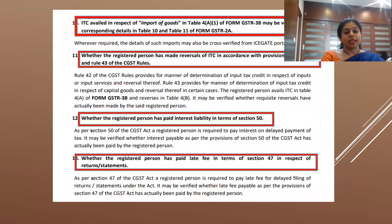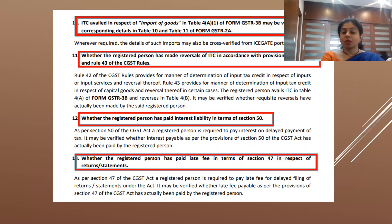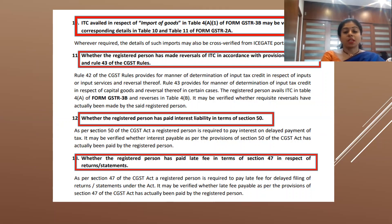Moving on to point number ten: in case of imports, details will be closely verified with the ICEGATE. Point number eleven — a very important and critical point — deals with Rule 42 and Rule 43, which concern the reversal of input tax credit. Rule 42 applies to inputs for goods and services and Rule 43 to capital goods, covering inputs used for both business and personal purposes, or in combination with taxable and exempt supplies. The department checks on the reversal of ITC on personal and exempt supplies, and if any discrepancy is found, it may draw the case towards scrutiny.